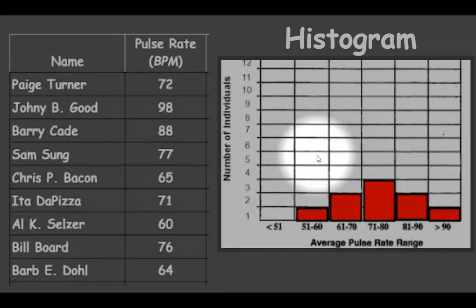So these different categories are actually pulse rate ranges. So an average pulse rate range, for example 61 to 70, or the number of individuals that fall within this range.